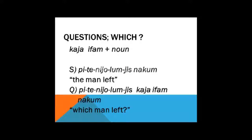Now let's look at which. The equivalent in Latropath is kaya yi fam plus noun. This doesn't necessarily appear at the end of the sentence — kaya yi fam appears before whichever noun we're wanting to specify. Based on the statement the man left, I stick kaya yi fam before nakum and say: pita yi alum yis kaya yi fam nakum, which man left?